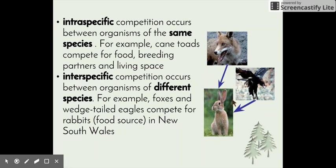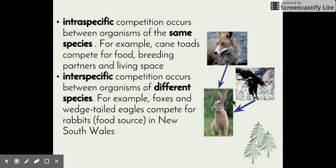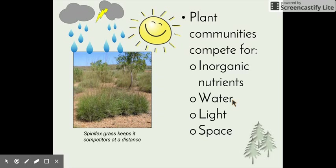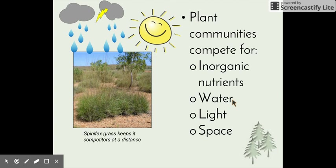Going back to the plant example from the first slide, those two plants did not look the same — one had a light trunk, the other a dark trunk — so they are two different species competing for sunlight, making it interspecific competition. Plant communities compete for inorganic nutrients, water, light, and space. Water and light are particularly important for photosynthesis, and inorganic nutrients keep the plant healthy. Some plants, like spinifex grass, have an adaptation where they release substances into the soil that stop other plants from growing nearby.